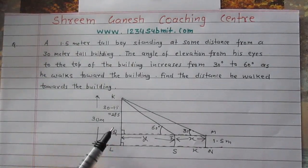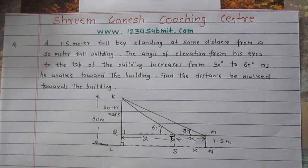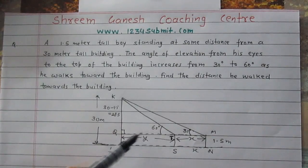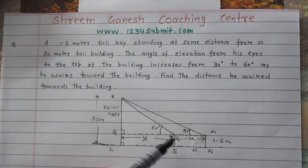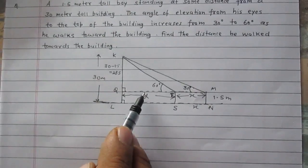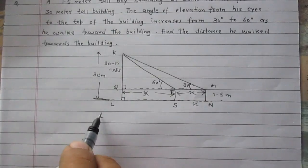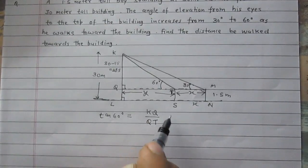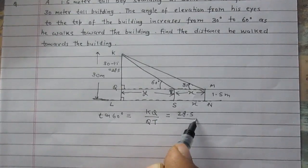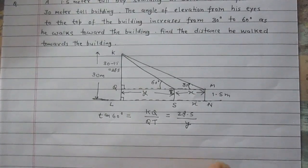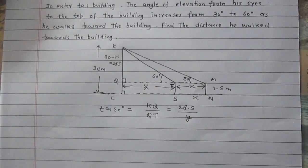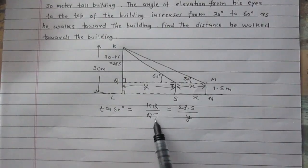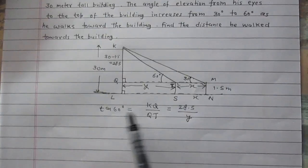Now in right angle triangle KQT, we see that the perpendicular is KQ which is 28.5 and the angle under consideration is 60 degrees. We will find Y and X both. So for Y we can write tan of 60 degrees is KQ upon QT. KQ is 28.5 and QT we have considered it as Y.